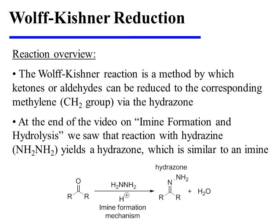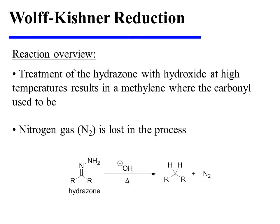The Wolff-Kishner reaction is a method by which ketones or aldehydes can be reduced to the corresponding methylene, or CH2 group, via the hydrazone. Reaction with hydrazine yields a hydrazone, which is similar in nature to an imine. Treatment of the hydrazone with hydroxide at high temperatures results in a methylene or CH2 group where the carbonyl used to be. Nitrogen gas is lost in this process.